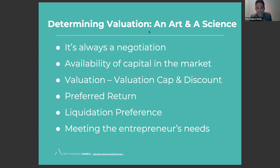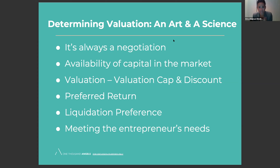We have a question from Mariana asking about the science behind convertible note valuation caps and discounts. For a typical convertible note, the valuation cap is just a number — say $5 million — and the discount is generally around 20%. It's really important to understand what is market for your stage and size of round. When we say it's an art and a science, there's a mathematical way to calculate what's reasonable for a valuation, but the art part is the negotiation aspect of how a deal gets done.